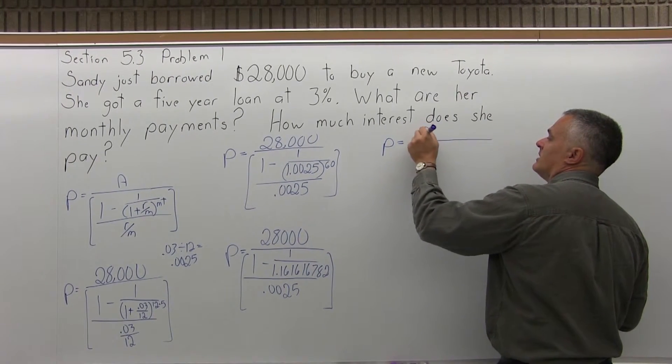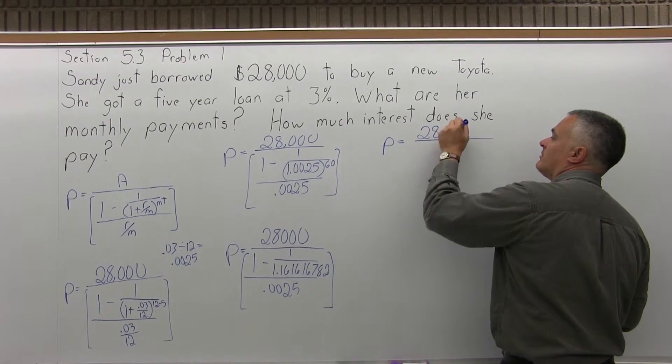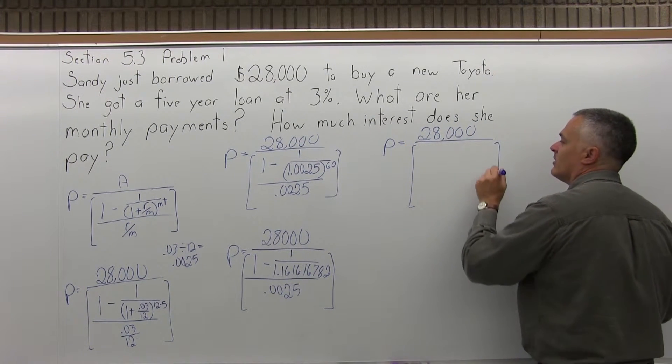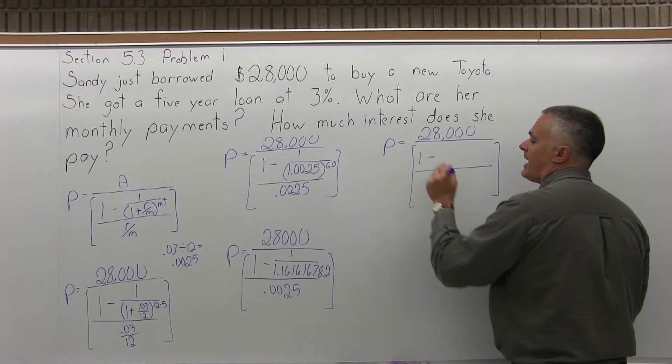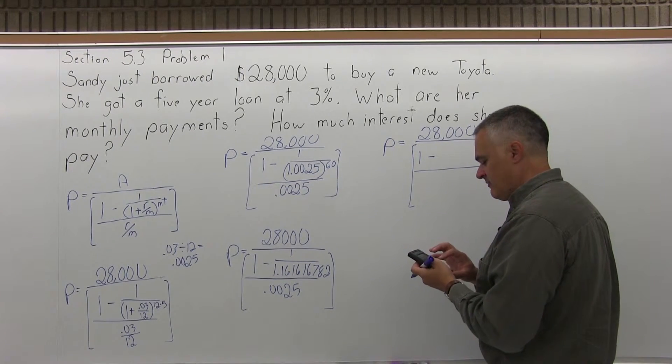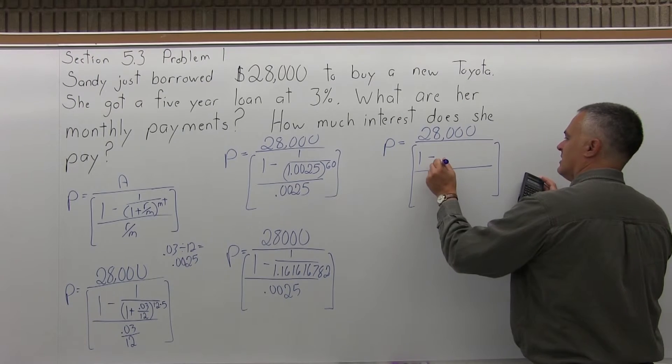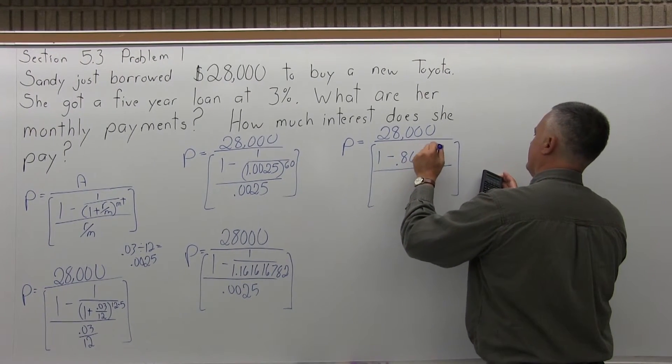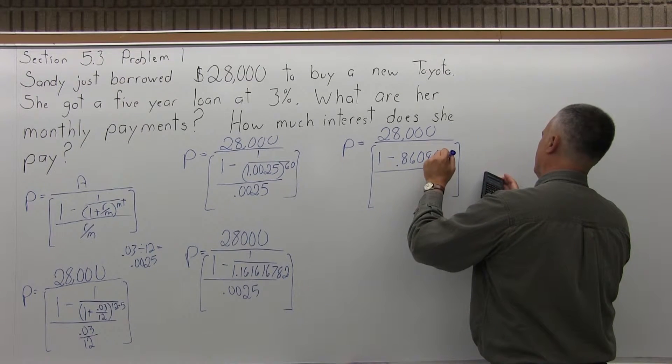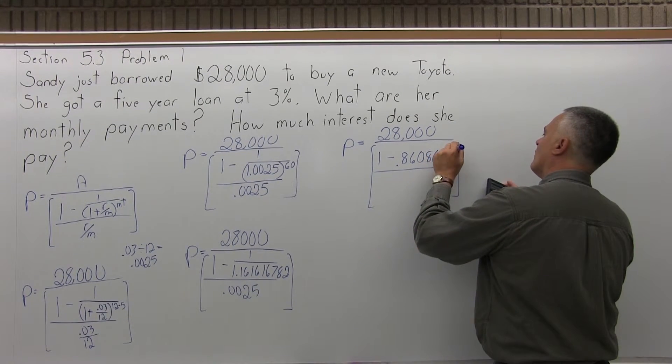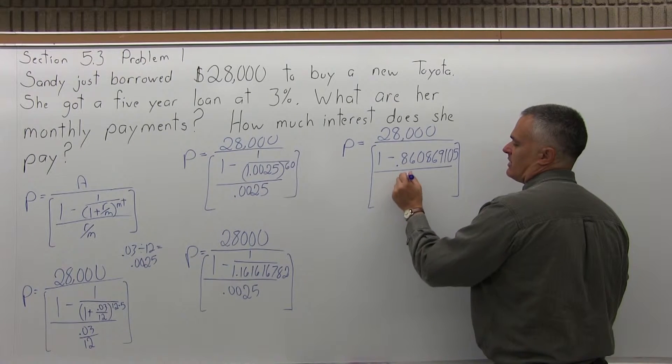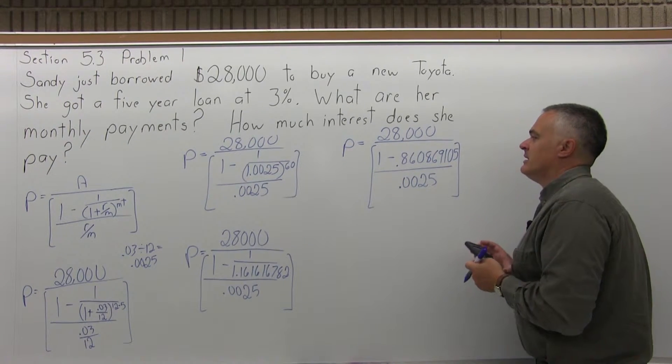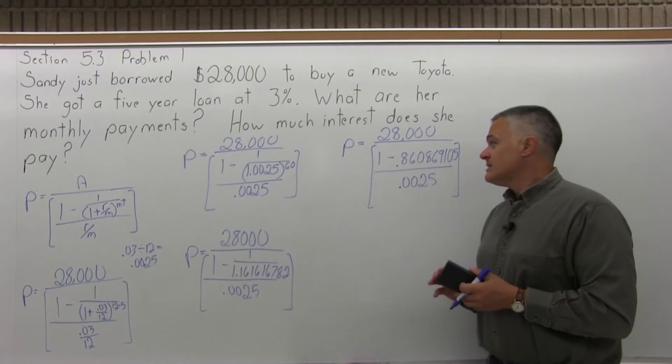the next stage of the problem will give me 28,000 on the top of the brackets again. And then underneath in brackets, I will have 1 minus, and the result of my division, however you do it with your calculator, is 0.860869105. And in the denominator of the brackets, we still have 0.0025. So it's getting better. It needs to take a while.